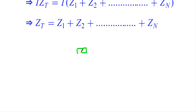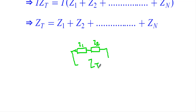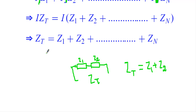So whenever we have several impedances Z1, Z2, and so on connected in series, we can replace them with a single equivalent impedance ZT with respect to the two terminals, where ZT = Z1 + Z2 + ... + Zn. This reduction will come in handy when we perform network analysis of AC circuits.